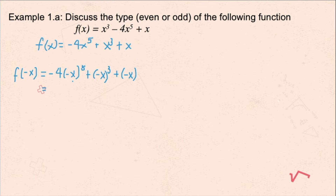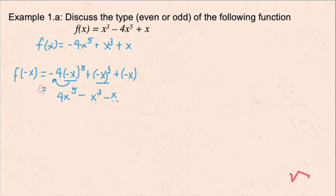Evaluating this: negative 4 times (-x) to the fifth power — since (-x)⁵ is -x⁵, multiplying by -4 gives positive 4x⁵. Then (-x)³ is -x³, so we get minus x³. Then minus x. So our f(-x) is: 4x⁵ - x³ - x.